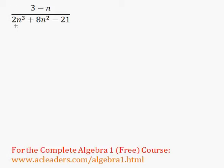Simplify the following rational expression. We have 3 minus n all over 2n cubed plus 8n squared minus 21.